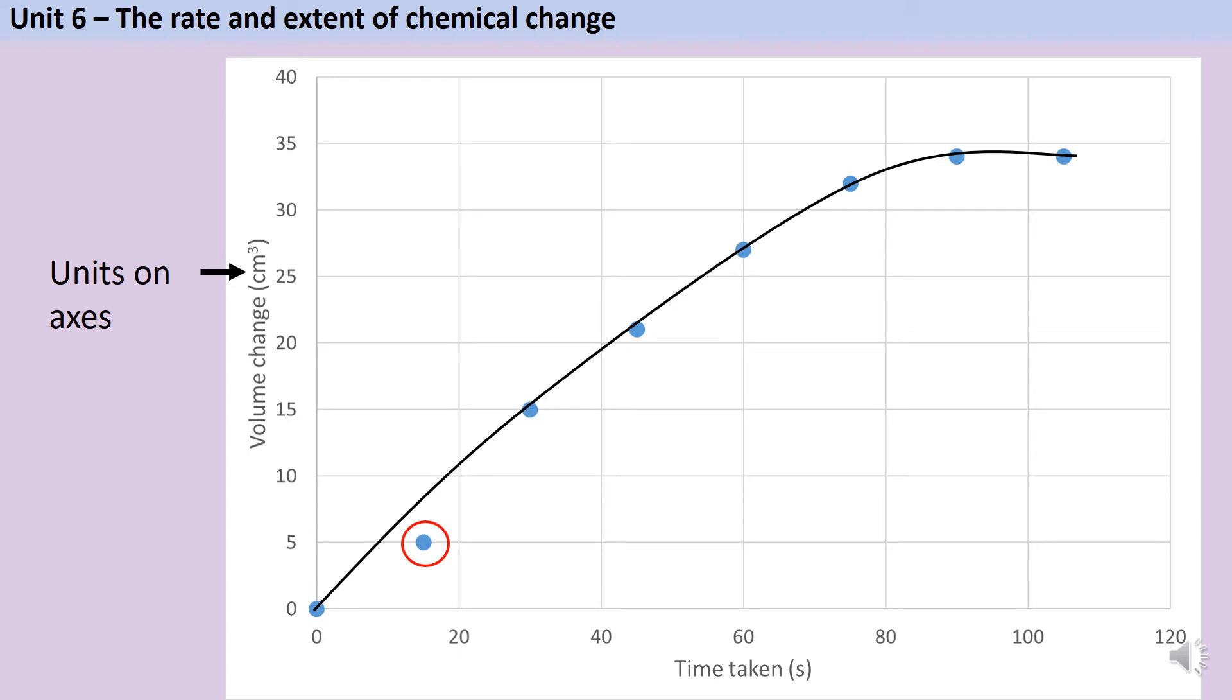You could be asked to calculate a mean or overall rate of reaction for this reaction. In doing so, it's important to identify where the reaction actually stopped. Although I took another reading after 105 seconds, actually no more gas had been produced in this time because all of the magnesium had been used up.